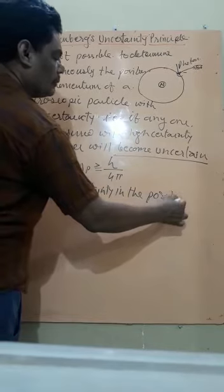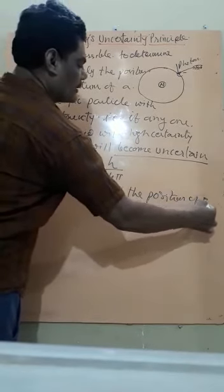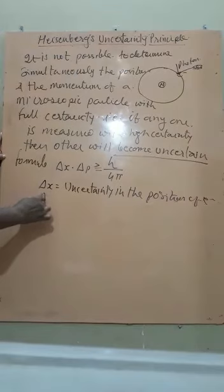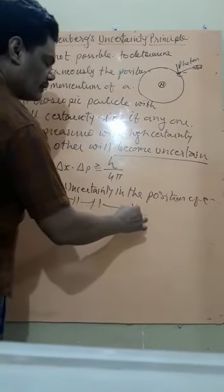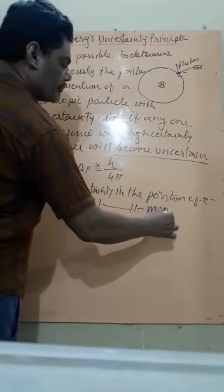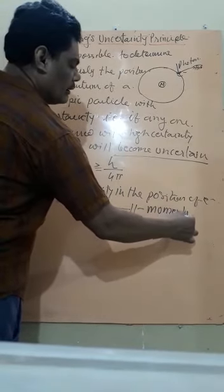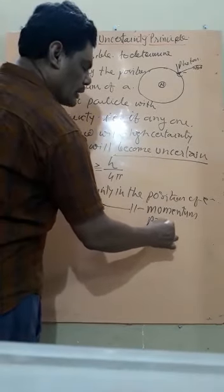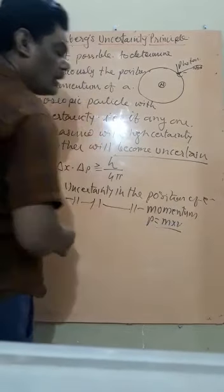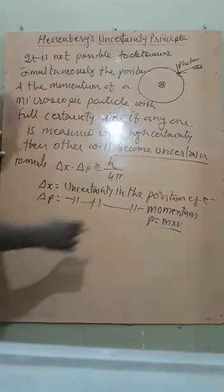In the position of electron that is it is getting changed and del P is uncertainty in the momentum. In the momentum.